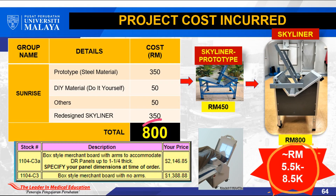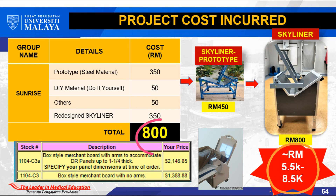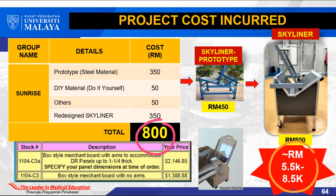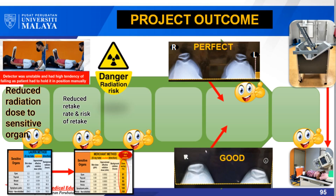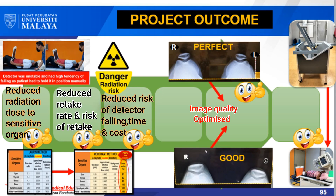In addition, our Skyliner is much cheaper than devices found in the market. The Merchant method was able to reduce the positioning time by up to 42%. These are all the positive outcomes from our project.